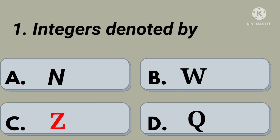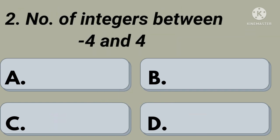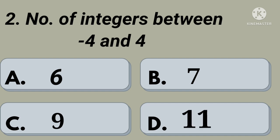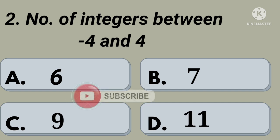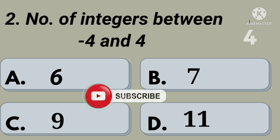Second question: number of integers between minus 4 and 4. Option A: 6, option B: 7, option C: 9, option D: 11. Your time starts now. Right, option B: 7.